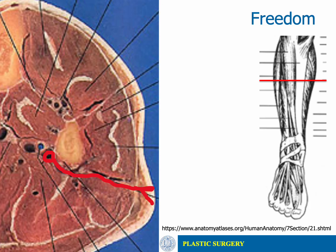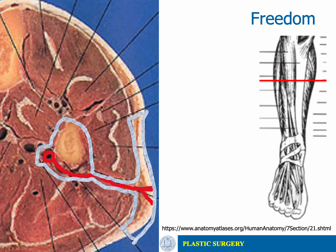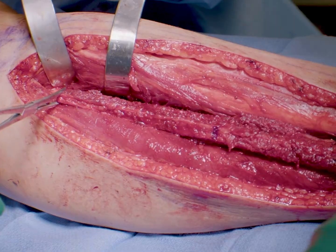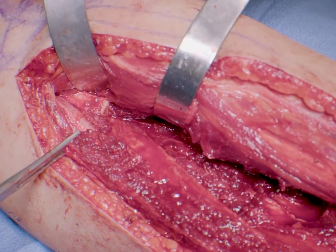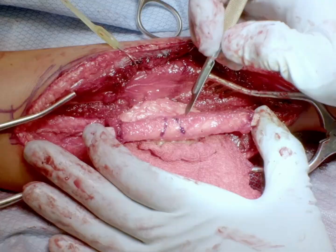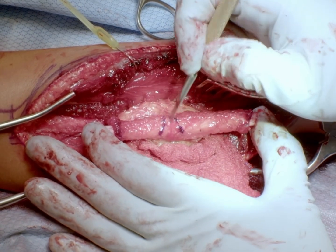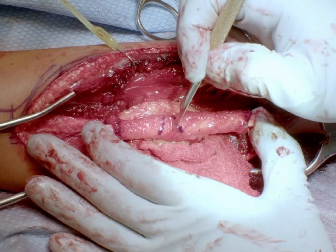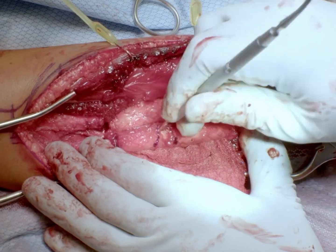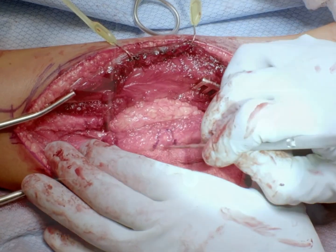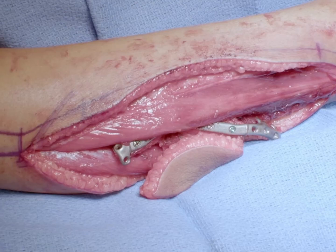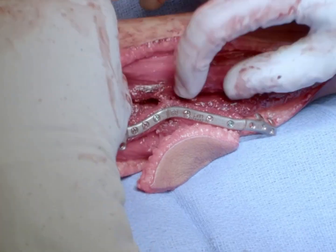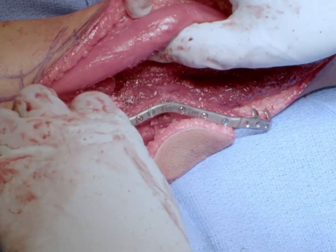The flap should now be fully free. If additional osteotomies are needed for custom reconstruction, subperiosteal cuts are performed to preserve the periosteum. Custom plating can be performed even prior to flap harvest.